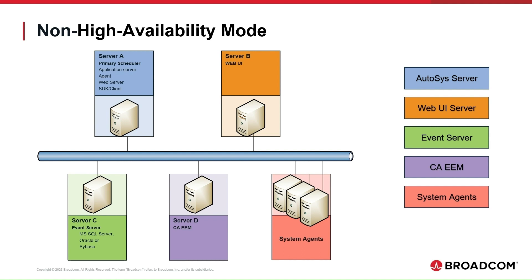Since Autosys is a mission-critical application, the recommendation is not to use this topology for a production environment. It is more suitable for test environments that are not so critical. If this topology is used in production, the recommendation is to have at least the Event Server in high availability on a cluster-aware database, such as Oracle RAC or Microsoft SQL Server Always On. The Autosys Dual Event Server mode can also be used to implement high availability for the database if the database doesn't provide a failover solution.